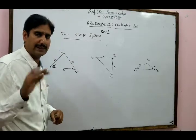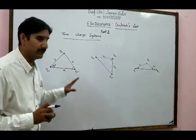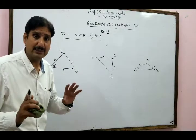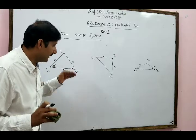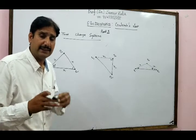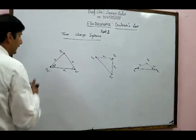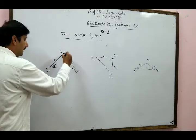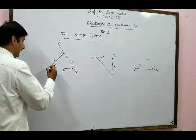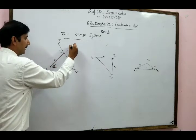In the first case, I am assuming all charges are similar — Q1, Q2, and Q0 are either all positive or all negative — meaning only repulsive forces are acting. Q2 is pushing Q0 with force F, and Q1 is also pushing Q0 with a force F. Let's call them F1 and F2.